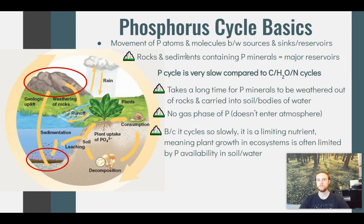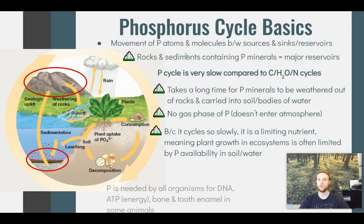Because phosphorus cycles so slowly, it's often a limiting nutrient in ecosystems. It takes a long time for rocks to weather and release phosphorus, which is then carried through runoff into bodies of water or soil, meaning organisms have less access to it. All organisms need phosphorus because it's a key element in ATP, which is an energy source for every living thing, and in DNA. For many animals, it also provides strength for bones and tooth enamel.